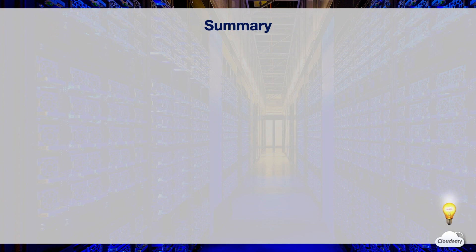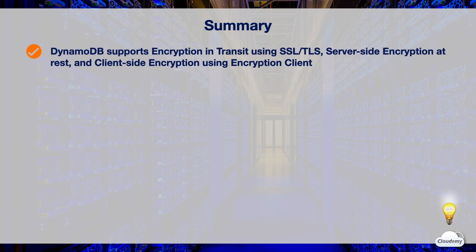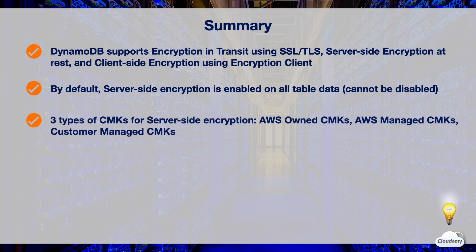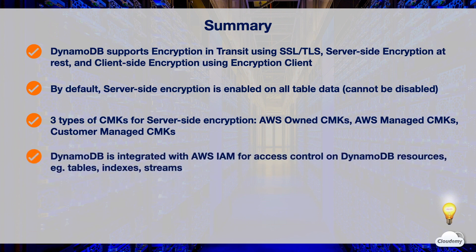In this episode, we've learned about security in DynamoDB. DynamoDB supports encryption in transit using SSL or TLS, encryption at rest with server-side encryption, and client-side encryption using the DynamoDB Encryption Client. By default, server-side encryption at rest is enabled for all table data, including secondary indexes, streams, and backups, and it cannot be disabled. There are three types of CMKs for DynamoDB encryption: AWS-owned CMKs, AWS-managed CMKs, and customer-managed CMKs. DynamoDB is integrated with AWS IAM for secure access control, and you can use IAM policies to grant users and groups access to DynamoDB resources such as tables, indexes, and streams.